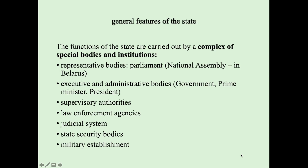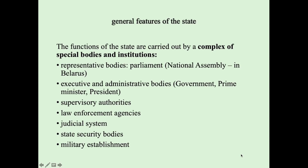For example, in the Republic of Belarus the judicial system is represented by the constitutional court, common courts, and economic courts. According to the question 'who rules,' there are four answers: if one rules, this is monarchy or dictatorship; if none rules, this is anarchy; if few rule, this is oligarchy; if all rule, this is democracy.